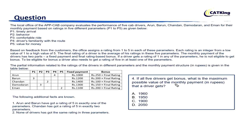Question 4: if all 5 drivers get a bonus, what is the maximum possible value of the monthly payment? Starting with Arun: he gets exactly one 5. To maximize, assign 4, 4, 3, and 3 to the remaining slots along with 5. Total = 5+4+4+3+3 = 19. Final rating = 19/5 = 3.8.